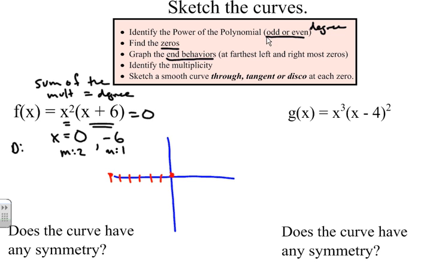Because it's a third-degree polynomial, it's odd. What we know about end behaviors for odd-degree polynomials is that on the right side the graph rises, and on the left end behavior it falls. So we sketch in our end behaviors as the second step — we identify the degree, plot our zeros, and draw in our end behaviors.